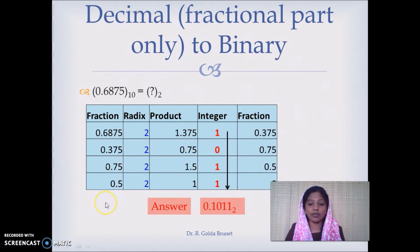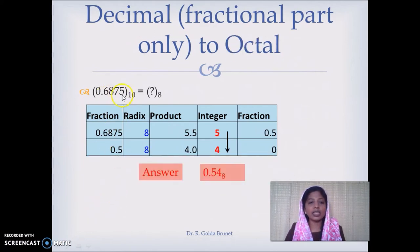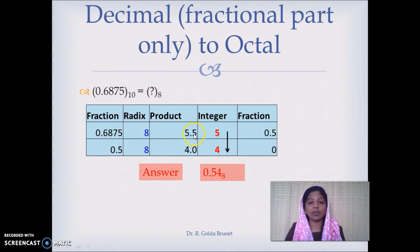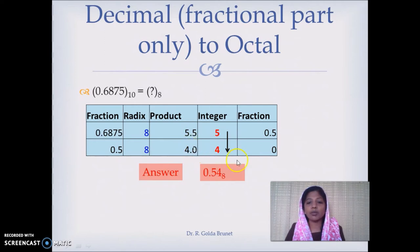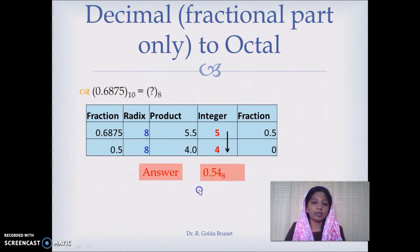Suppose we want to convert 0.6875 in decimal number system to octal number system. We multiply this fraction by the radix of the octal number system which is 8, and we get the product 5.5. 5 is the integer part and 0.5 is the fractional part. We multiply 0.5 by 8 and get 4.0; the fractional part has become 0 and 4 is the integer part. So the equivalent of 0.6875 in decimal is 0.54 in octal number system.